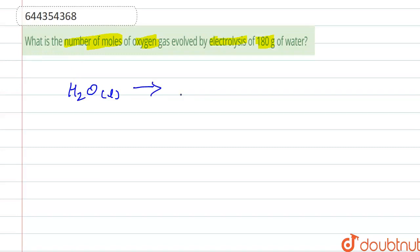So here, 2H2O forms 2H2 plus O2, right? So here we can see, first we calculate the number of moles from given mass.